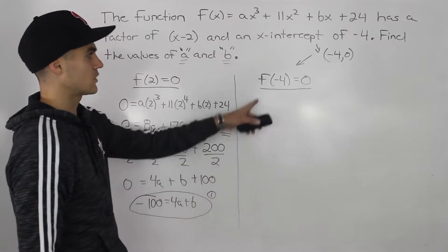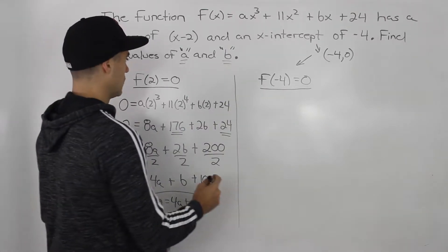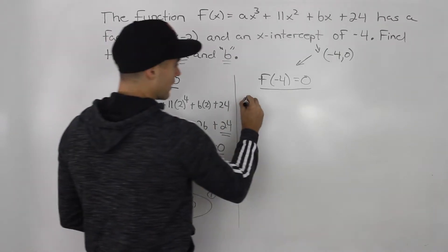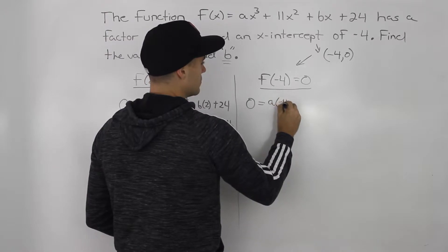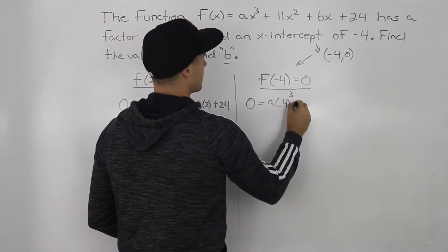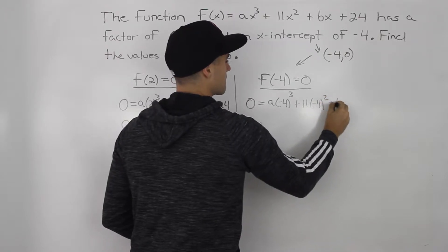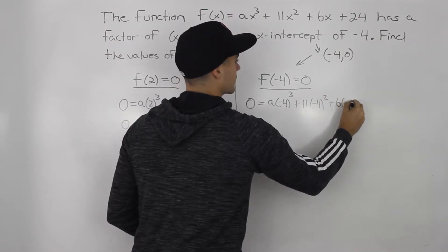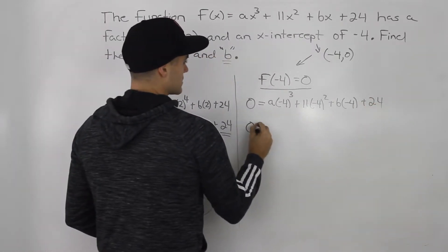All right, so let's make a second equation with this expression. f(negative 4) is equal to 0. Well, again, as we did here, y value is 0. And that's going to happen at an x value of negative 4. So if we plug in negative 4 everywhere, we would end up getting this. And now we have to simplify it.